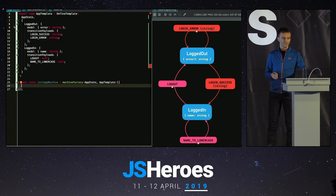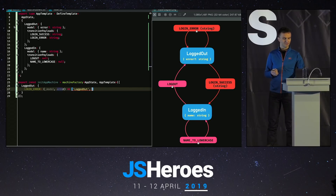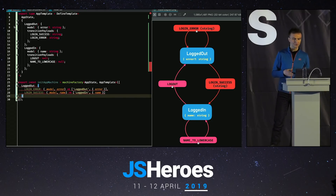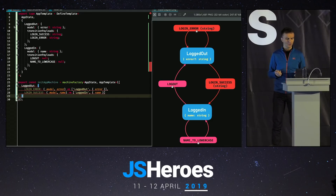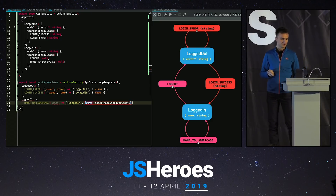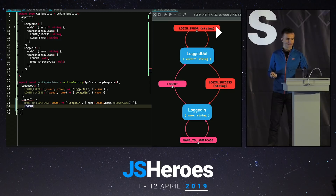Now we actually define the machine factory, which is actual code - so far it was just types. This machine factory describes the transitions. For the logged out state, we can do login error and login success. Each function is basically like a reducer - we get the model and the payload, and we transition to another state with its model. We get the model name and do the lowercase on it, and the compiler will not complain because the name is always defined. From logout, we just transition to logged out with no error.